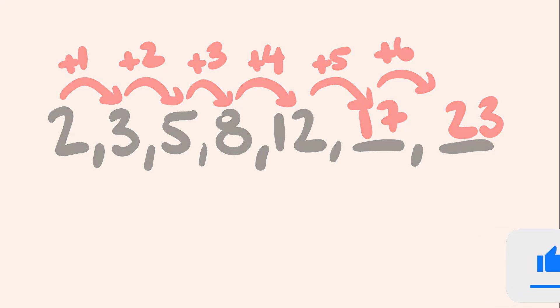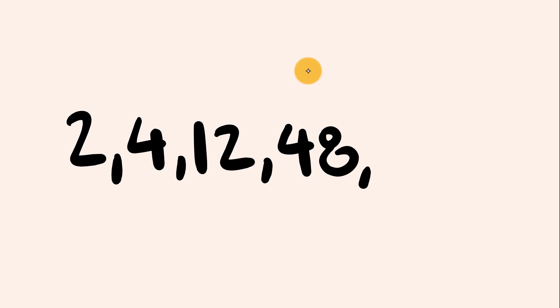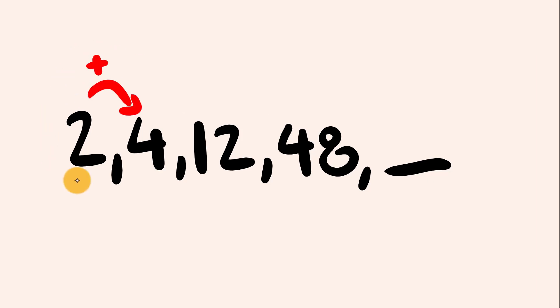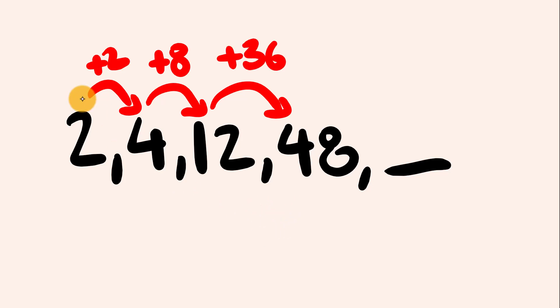What about another example: we start with 2, then 4, then 12, then 48. What is the next value? Pause the video and give this a go. Looking at the differences: from 2 to 4 we go up by 2, from 4 to 12 up by 8, and from 12 to 48 up by 36. There's no clear pattern in those differences.